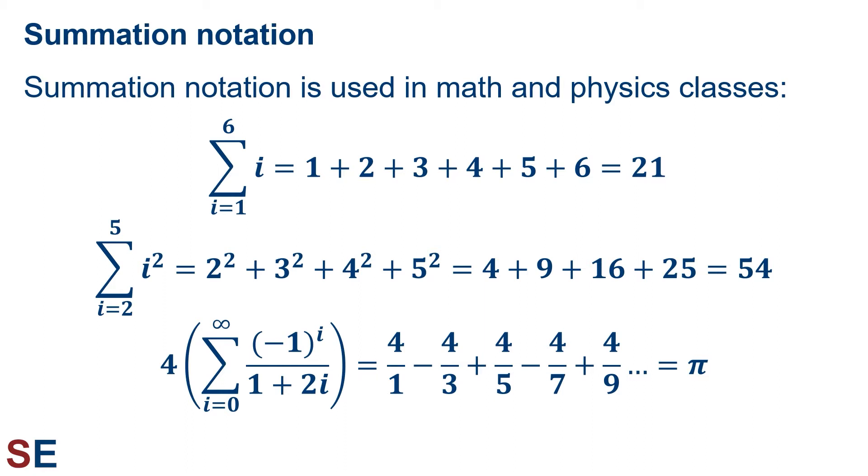The second example shows how we can incorporate additional calculations into each of the terms that will be added up. In this case, we're squaring the value of i and adding the squares up. Note also that the value of i is beginning with 2, as indicated by the text below the summation symbol.